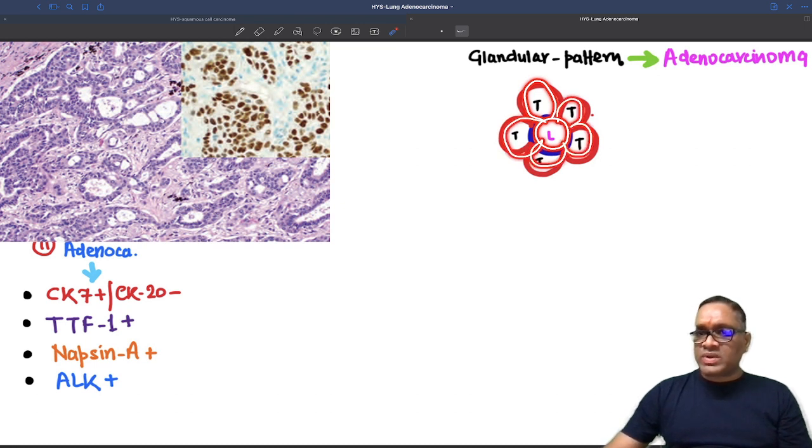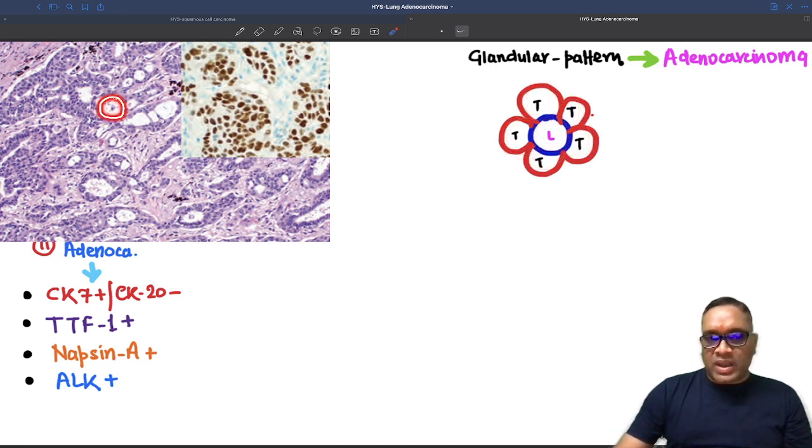So central lumen covered by tumor cells, this is called glandular pattern, which is seen in adenocarcinoma. Here you can see there are so many lumen and tumor cells are surrounding. These are all lumen and they are surrounded by tumor cells. So this is the glandular pattern.